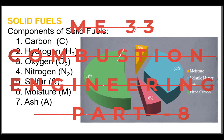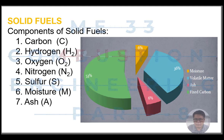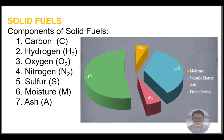Let's go to solid fuels. Here are the components of solid fuels: carbon, hydrogen, oxygen, nitrogen, sulfur, moisture, and ash. You will notice here in the pie chart the percentage content of each item.